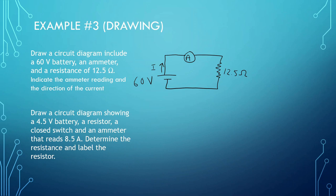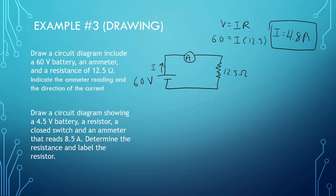So now we have to find what this current I is. We're going to use our formula: V equals IR. We know the voltage is 60, I is what we're looking for, and resistance is 12.5. This gives us 60 divided by 12.5, which is 4.8 amps. There's not as much resistance and more voltage, so that means the current is going to be moving a lot quicker.